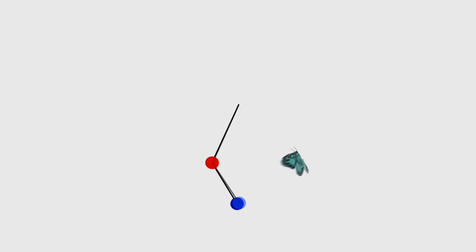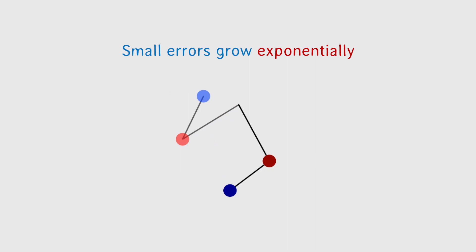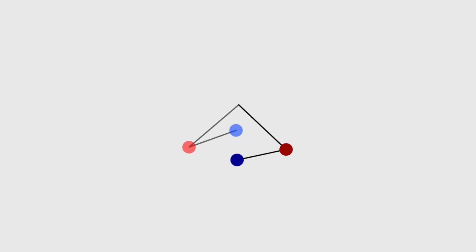But give it a bigger swing, and the motion can get very complicated indeed, and a tiny difference in the initial conditions quickly becomes a completely different pattern. Small errors grow exponentially. The compound pendulum is a nice example of a class of systems that are inherently mathematically unstable, in that small errors get rapidly amplified.